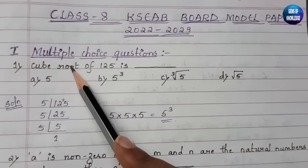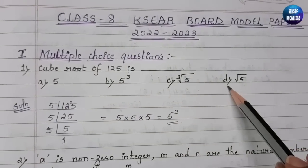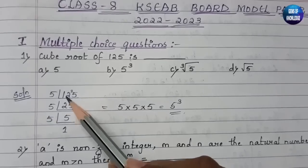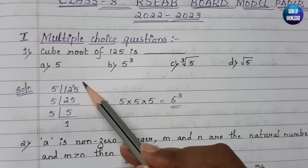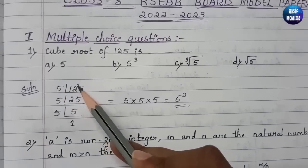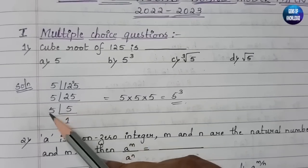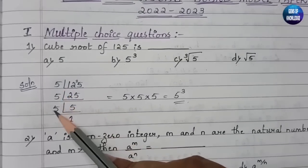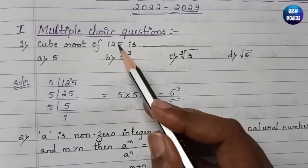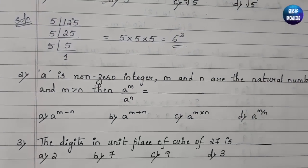The first question is: cube root of 125 is dash. The options are 5, cube root of 5, and square root of 5. To find the cube root of 125, we factorize it. Since the last digit is 5, it factors only by 5: 5 × 5 × 5 = 5³ = 125. So the answer is option B, that is 5.